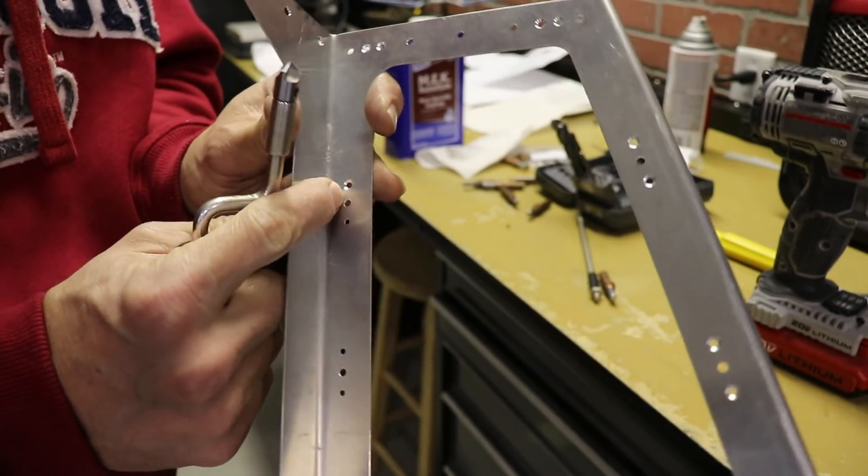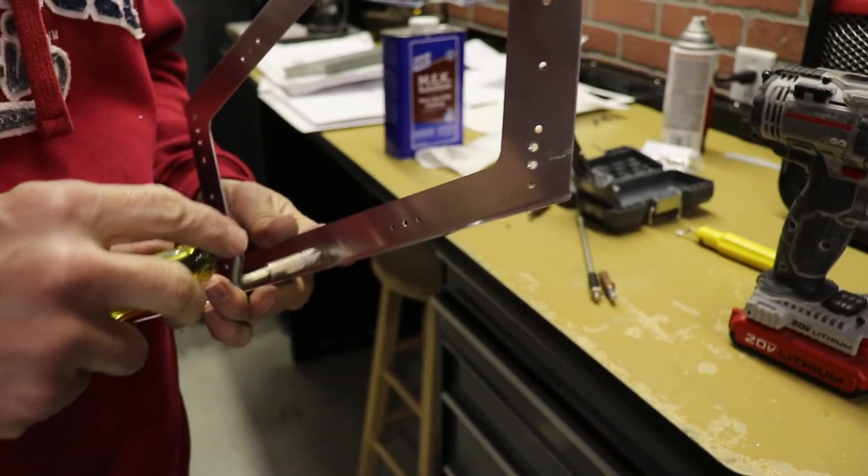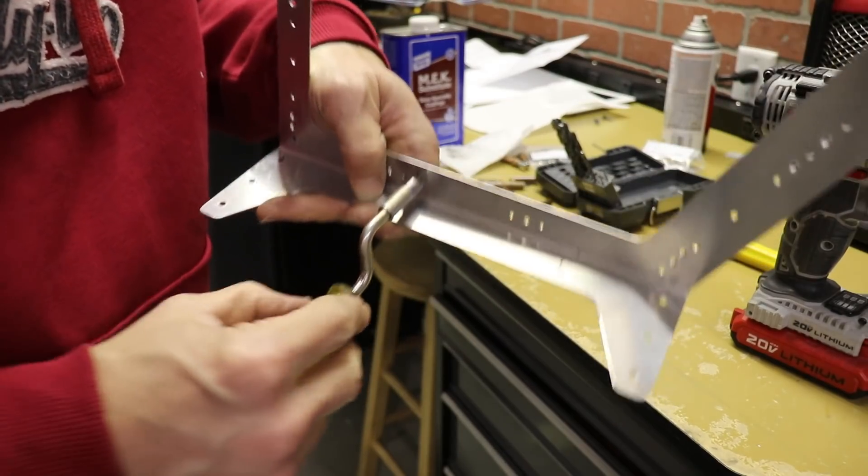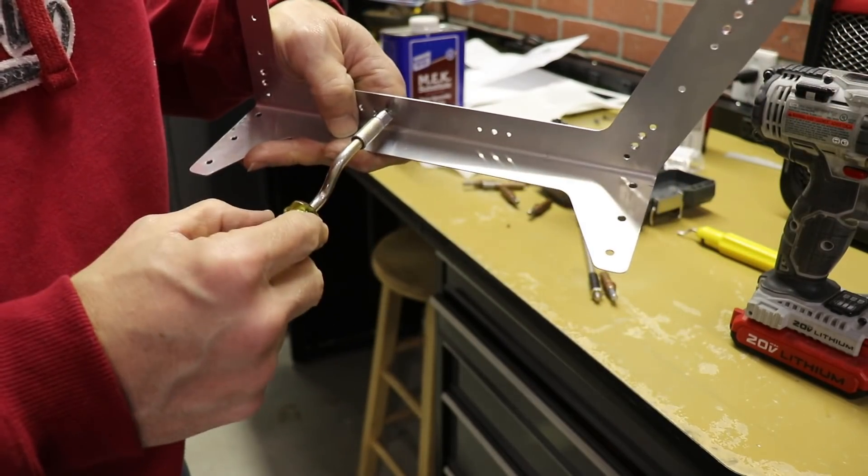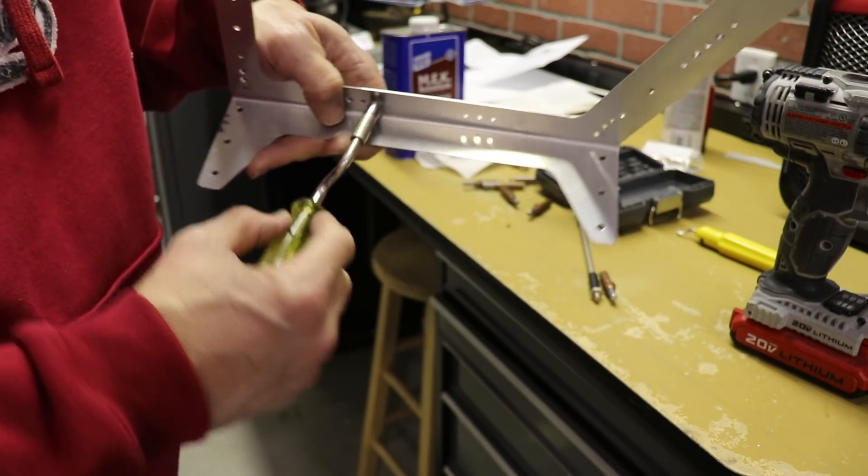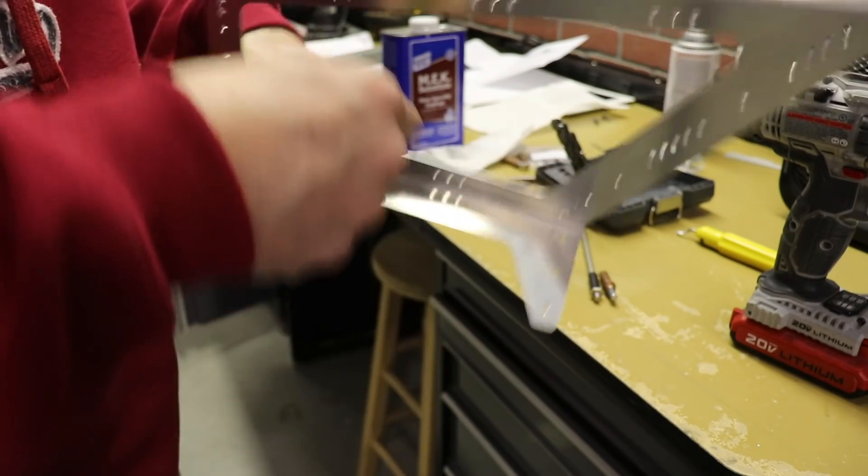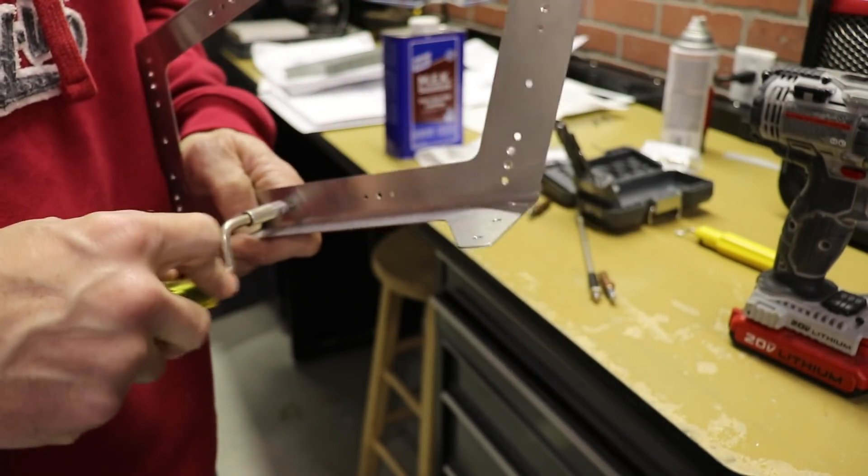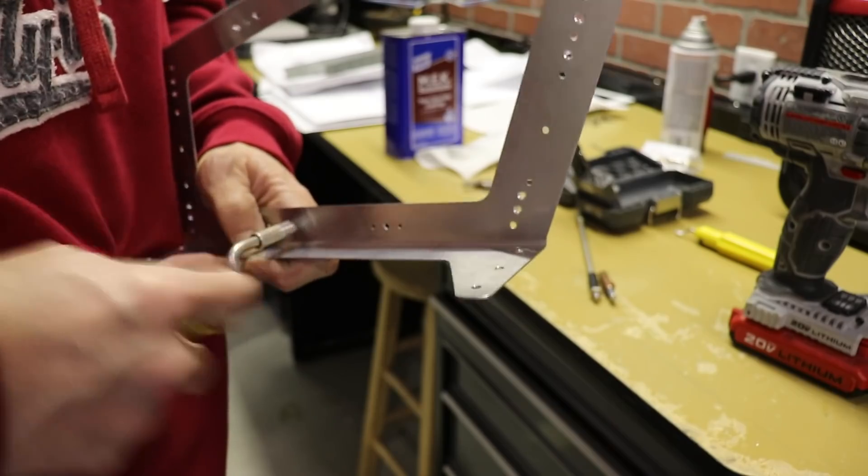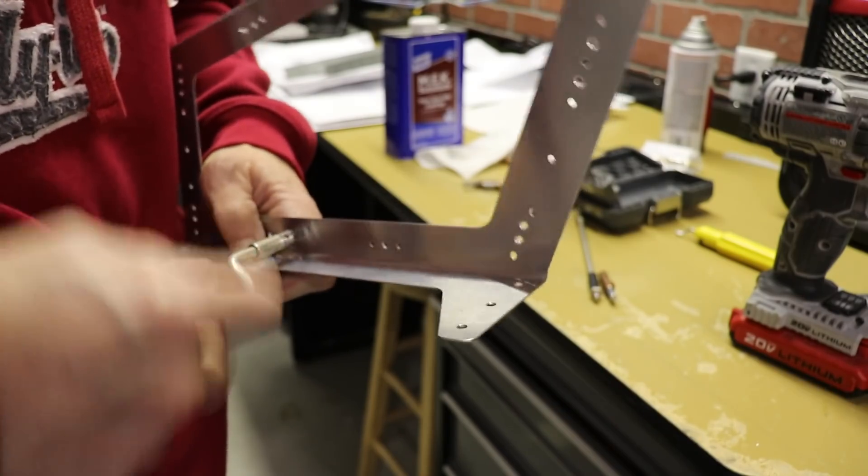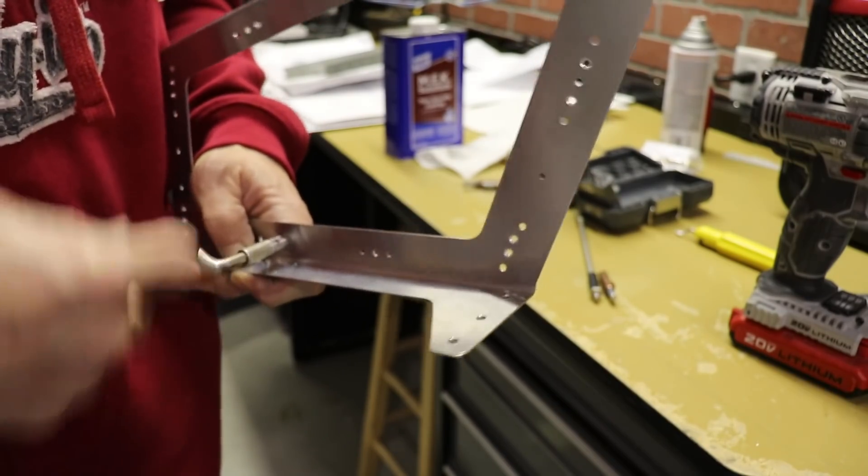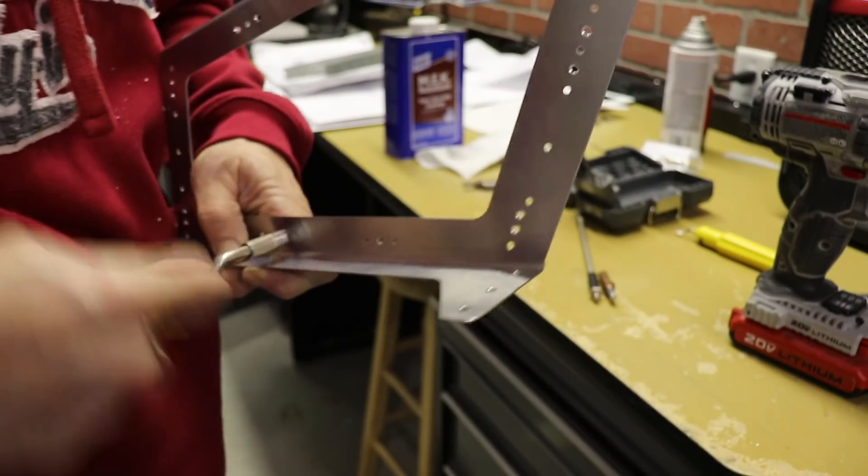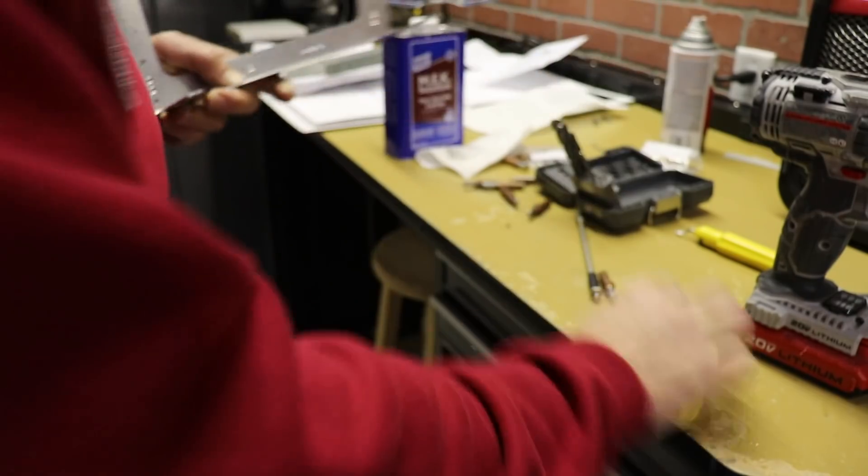You can see here, I've done this one already. And what I do is I just put it in there and I want to make sure the countersink tool is about as 90 degrees as I can get it. I don't want to do it this way or this way or this way. I want to make sure it's actually going straight on like that.